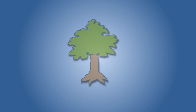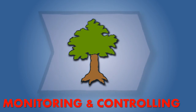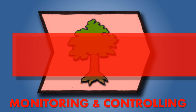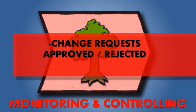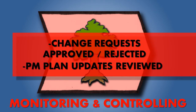Throughout the project life cycle, there will be a need to control change and monitor that the project is on time and on budget while still producing a quality deliverable. During the monitoring and controlling process, project change requests get approved or rejected, defect repairs are approved, and updates to the project scope and the project management plan are reviewed. This is the process group that is ultimately responsible for approving the final deliverables of the project.